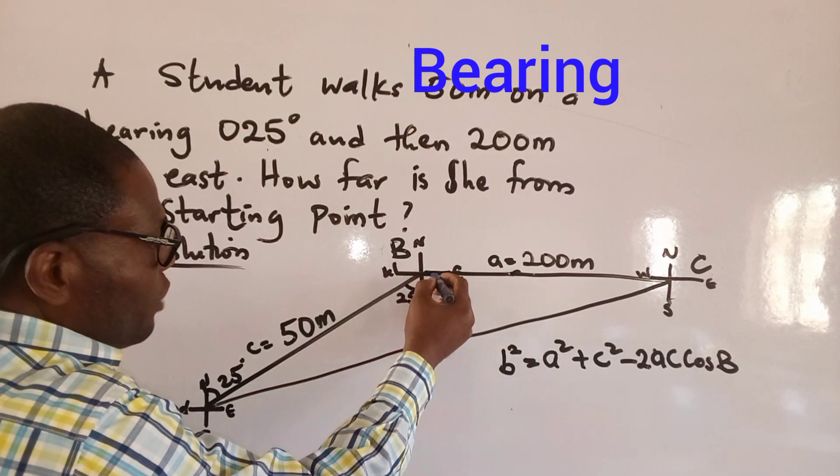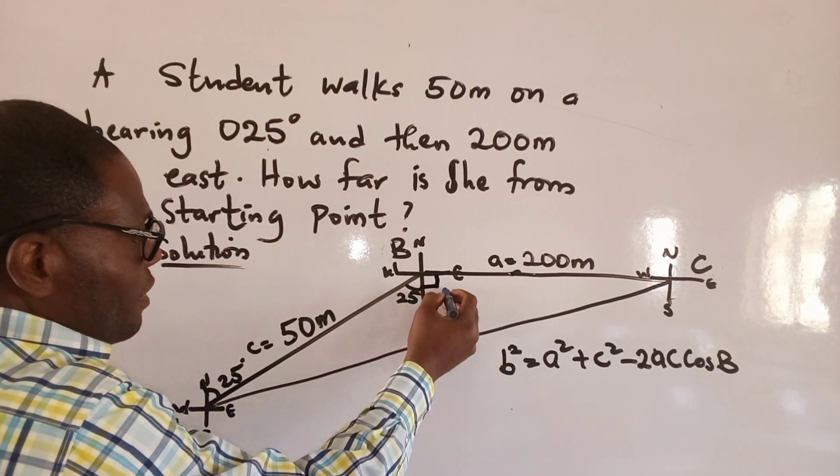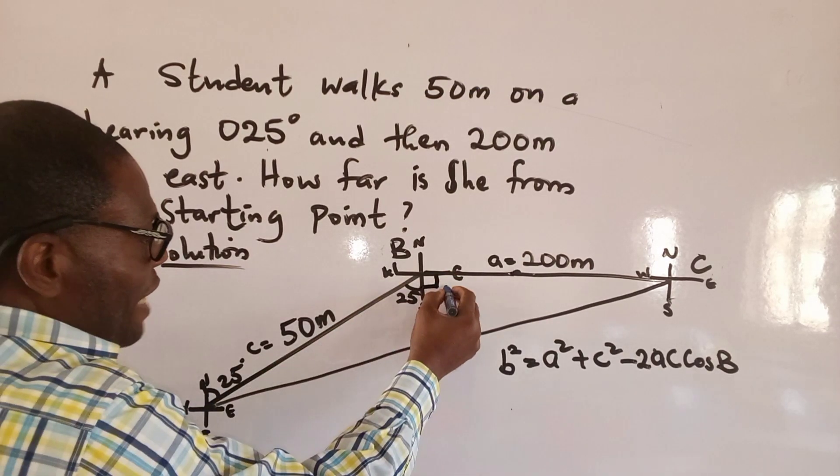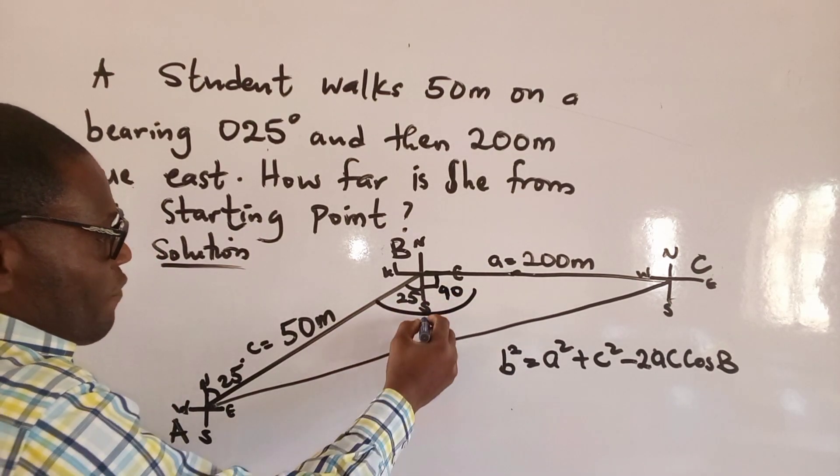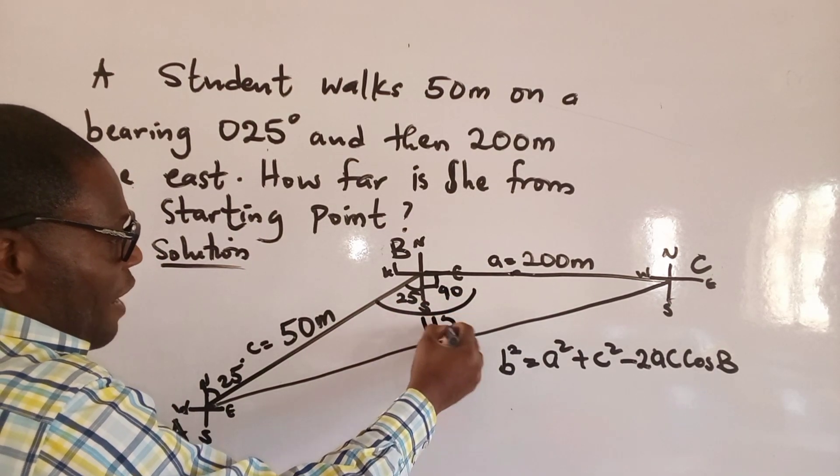So here, from here to here, it's 90 degrees. So 90 plus this, what would that give? 115 degrees.